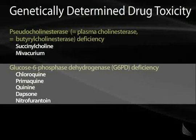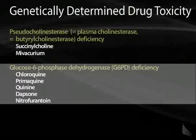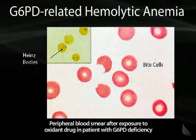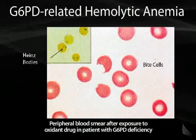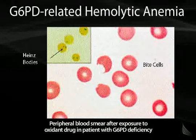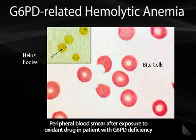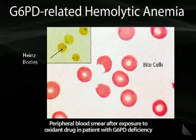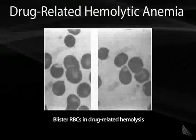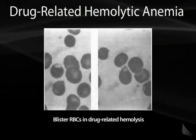Patients that have G6PD deficiency, when they take certain medications, can develop hemolytic anemia. This microscope slide shows bite cells present in a patient with G6PD deficiency after being exposed to an oxidant drug. The inset shows Heinz bodies, which are globin collections that the liver bites out — that's why these patients develop bite cells, also known as schistocytes. These are blister cells present in drug-related hemolysis.